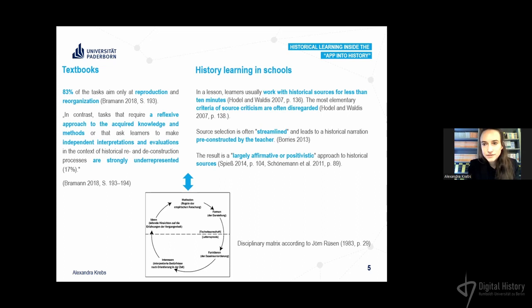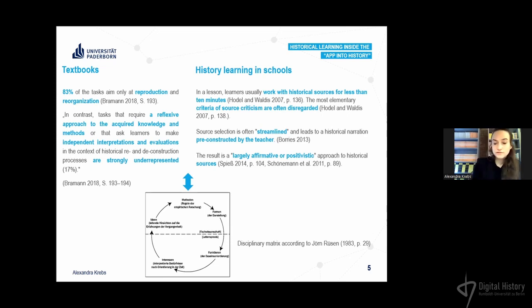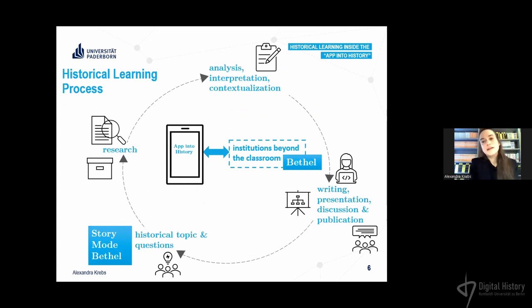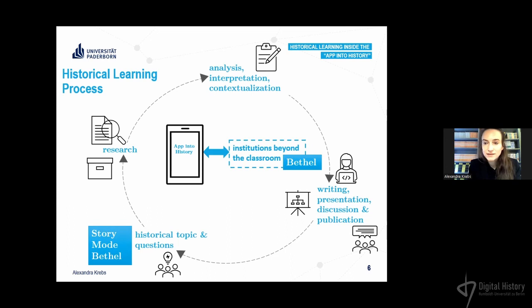Normally there isn't just one narration — there are many different narrations that historians discuss. This is often not the case in school classes, and it is frequently said that this is too difficult for high school students. However, there are many projects where students cooperate with archives, and we can see that such a learning process is possible. The idea of App into History is to provide students such a learning process, allowing them to cooperate with archives in the digital space and use the potentials of the digital space. Students develop their own historical topic and questions, search for historical sources, analyze and interpret them, and then write and present their own narration and discuss it in the classroom.